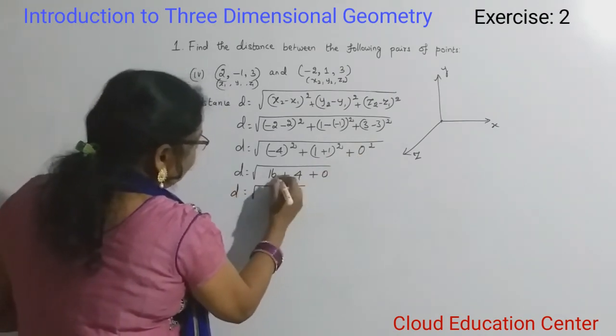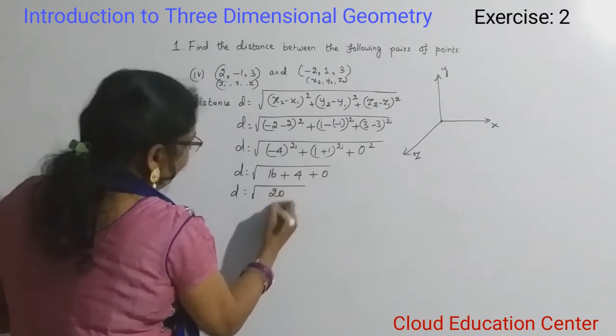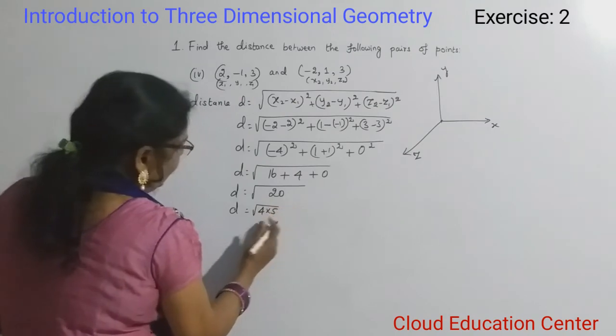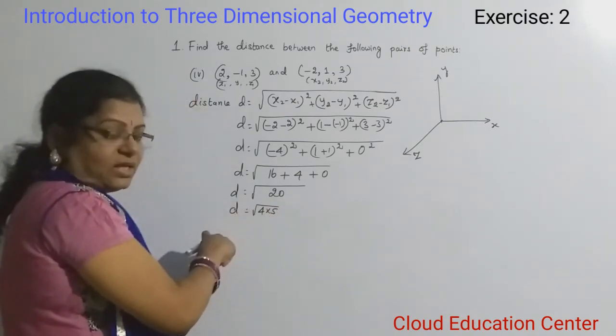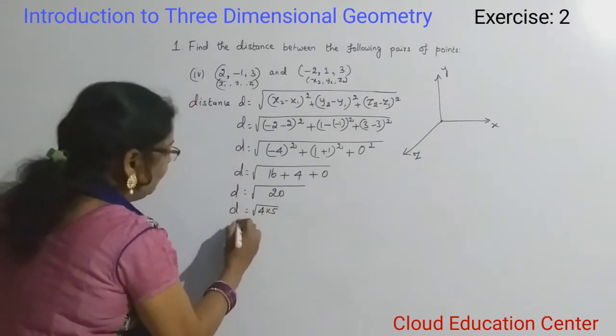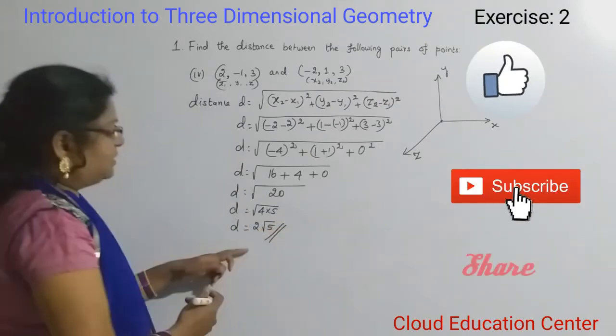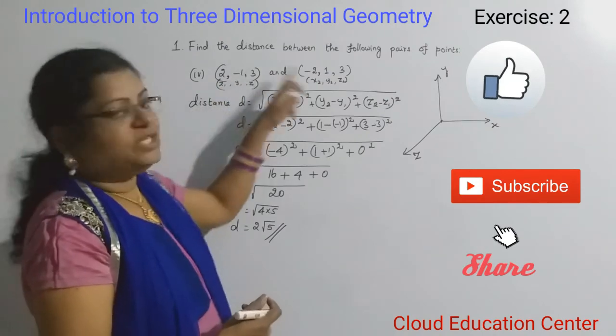Therefore, D equals 16 plus 4, which is 20. How can you write 20? 4 times 5 is 20. 4 is a perfect square, we can take it outside from the square root. Then we get D equals 2 root 5. This is the answer, the distance between these two points.